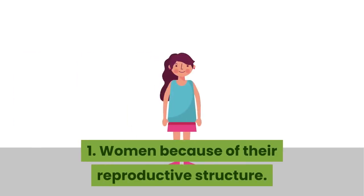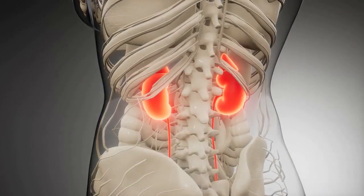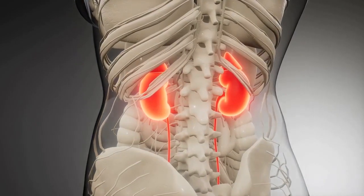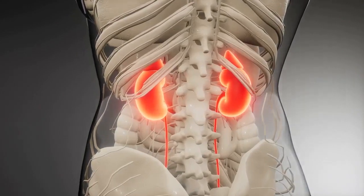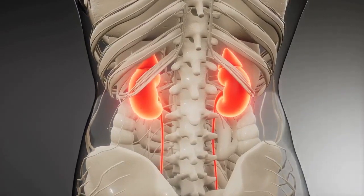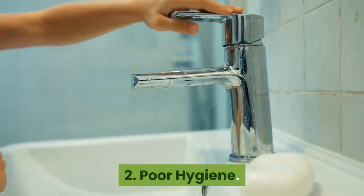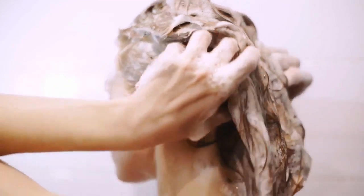1. Women, because of their reproductive structure. The urethra of women is more exposed since it is near the anus, which makes it an easy entry point for the invasion of bacteria. 2. Poor hygiene. Proper hygiene is one of the most effective preventions of bacterial infection; however, some people neglect to do the right thing sometimes. Women are suggested to wipe their private parts from front to back, as this can lessen the transport of bacteria from the anus to the urethra.